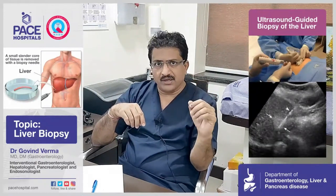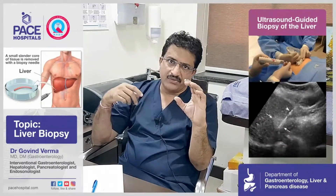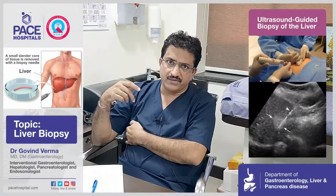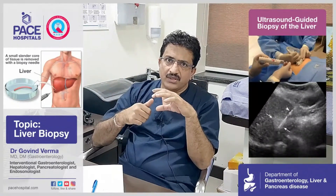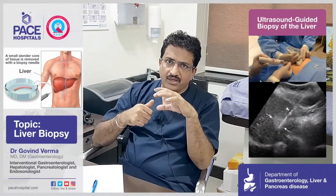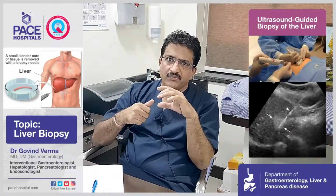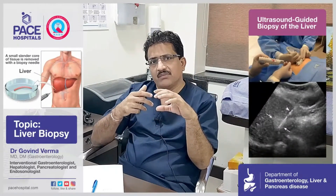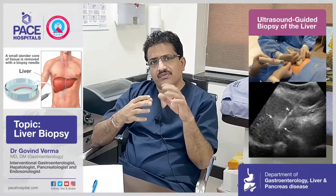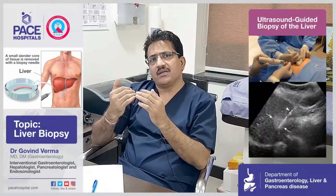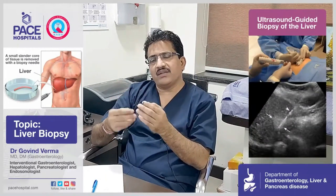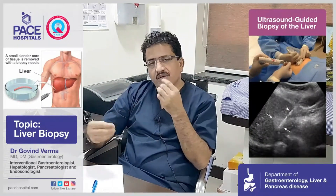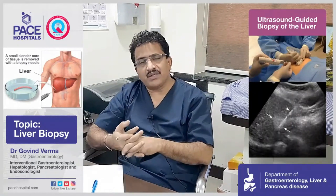We have a liver biopsy needle which we insert by giving a local anesthesia over the chest. We insert it around five to eight centimeters inside and then shoot the biopsy needle, by which we get a good tissue sample of around one centimeter. We then subject that tissue for further analysis.